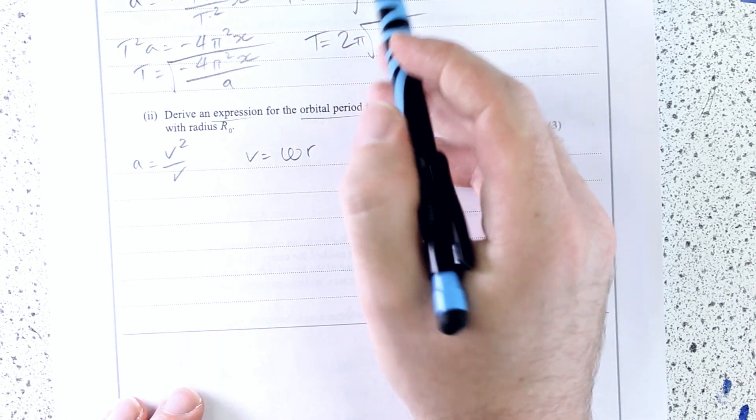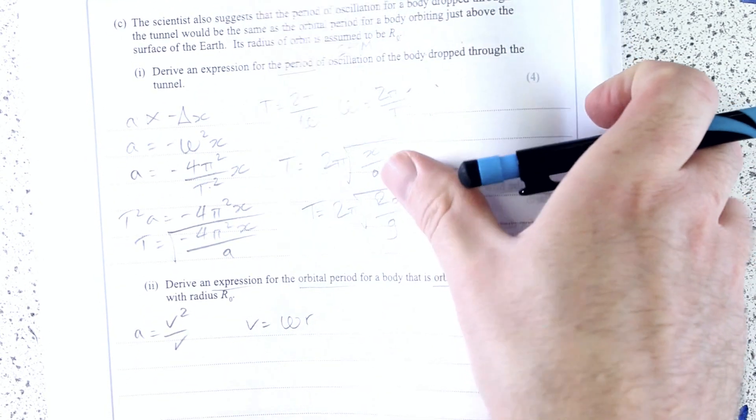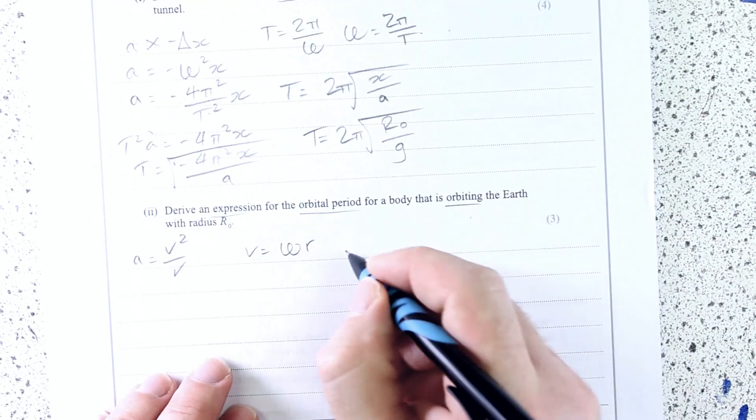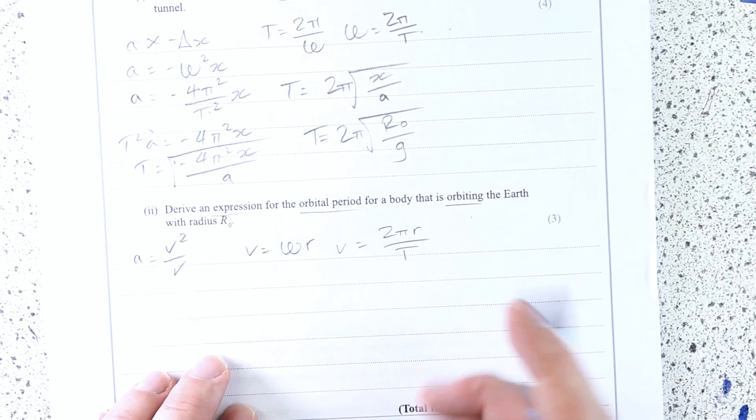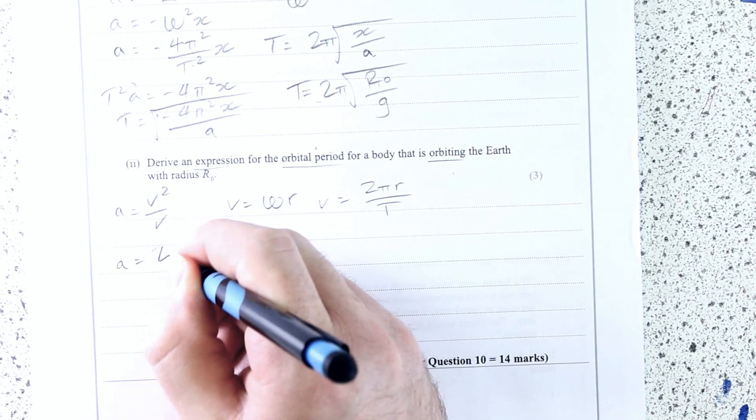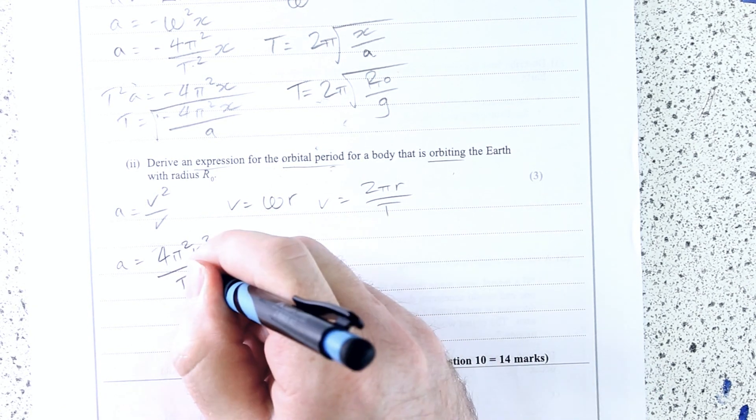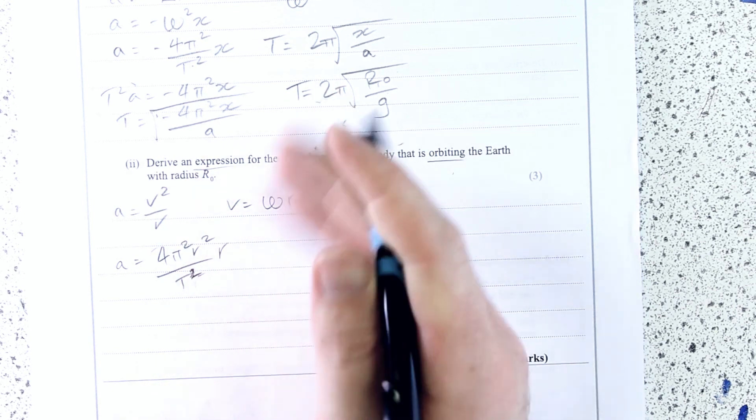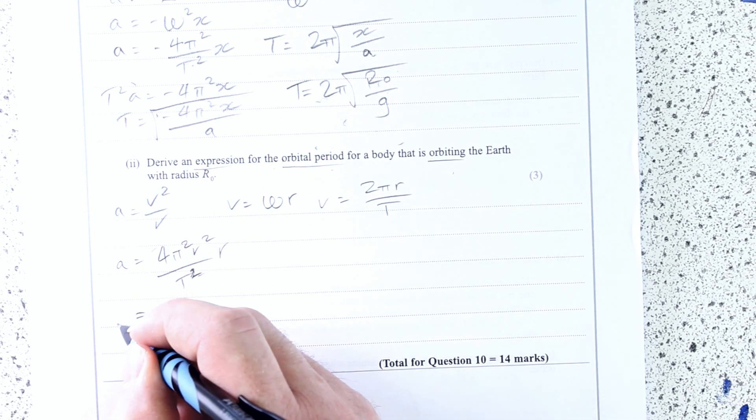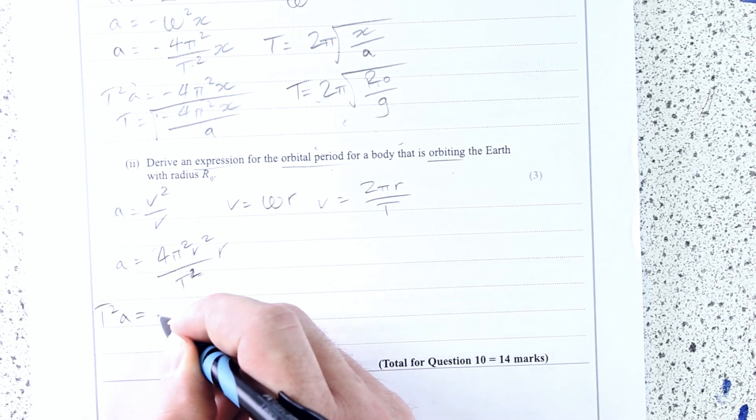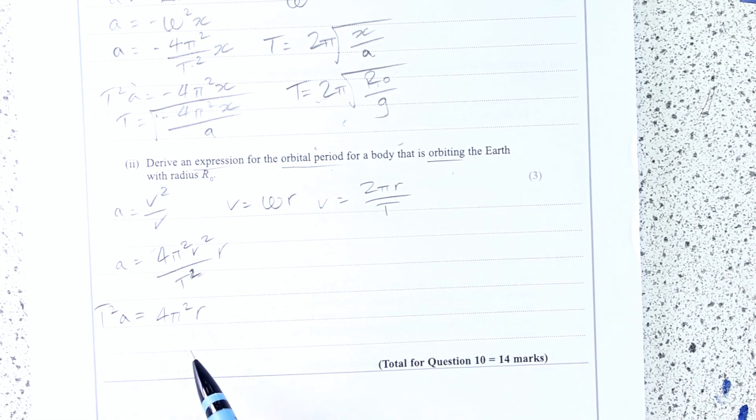And remembering if I've got omega, I've also got time period. So I can just sub this in instead of omega. And then I can put this in in my v squared. 4π² r² over t² over r. Obviously one of the r's cancels for the next line. And I want to rearrange for t, so I'll move that while I'm doing it.